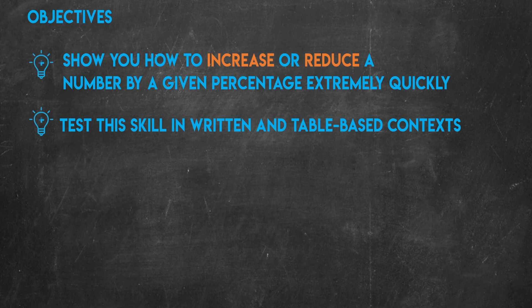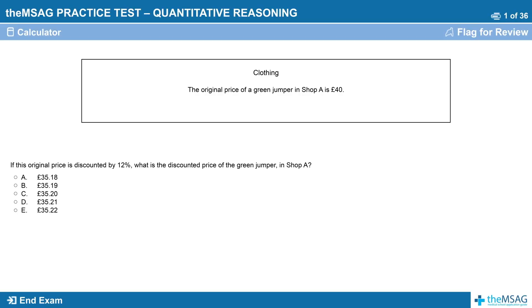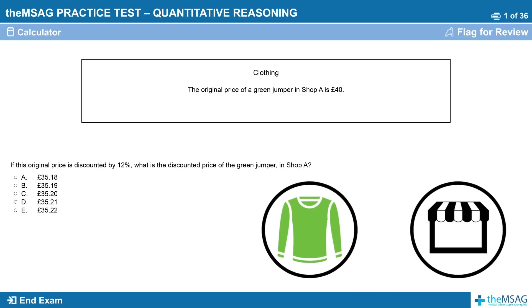Let's start with an example. Question 1: The original price of a green jumper in shop A is £40. If this original price is discounted by 12%, what is the discounted price of the green jumper in shop A?